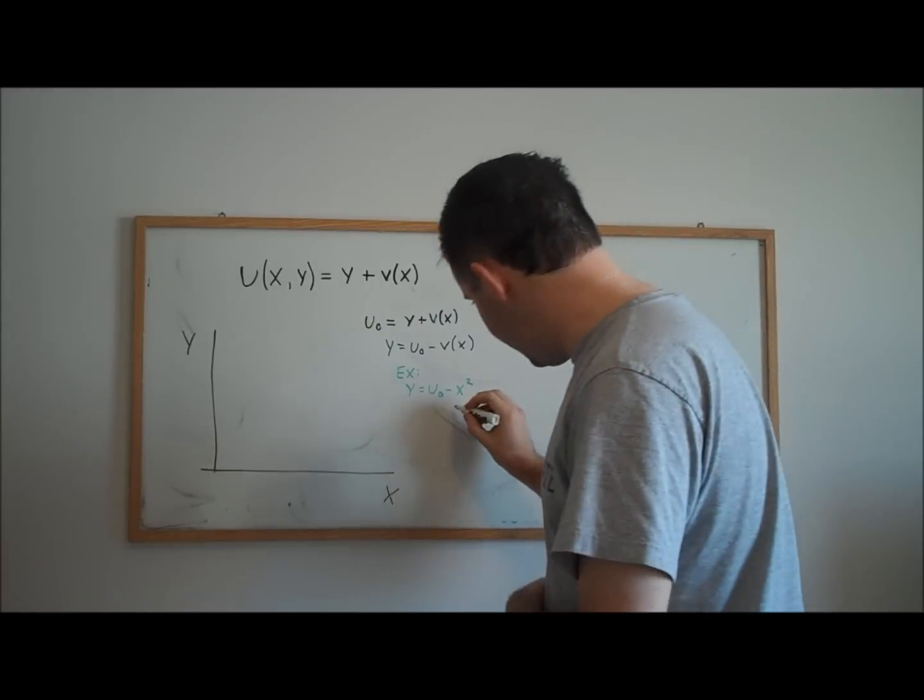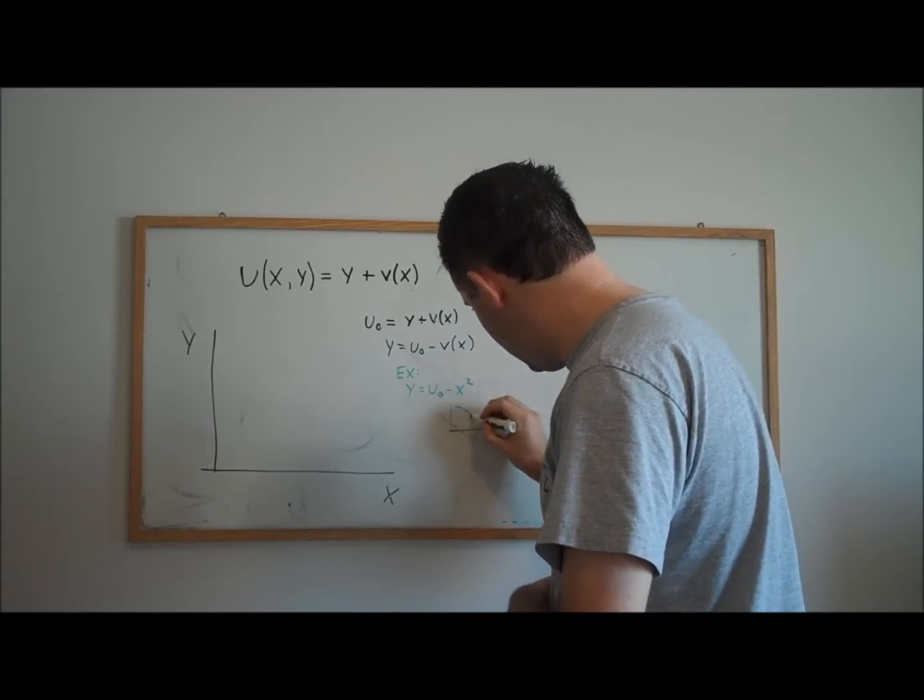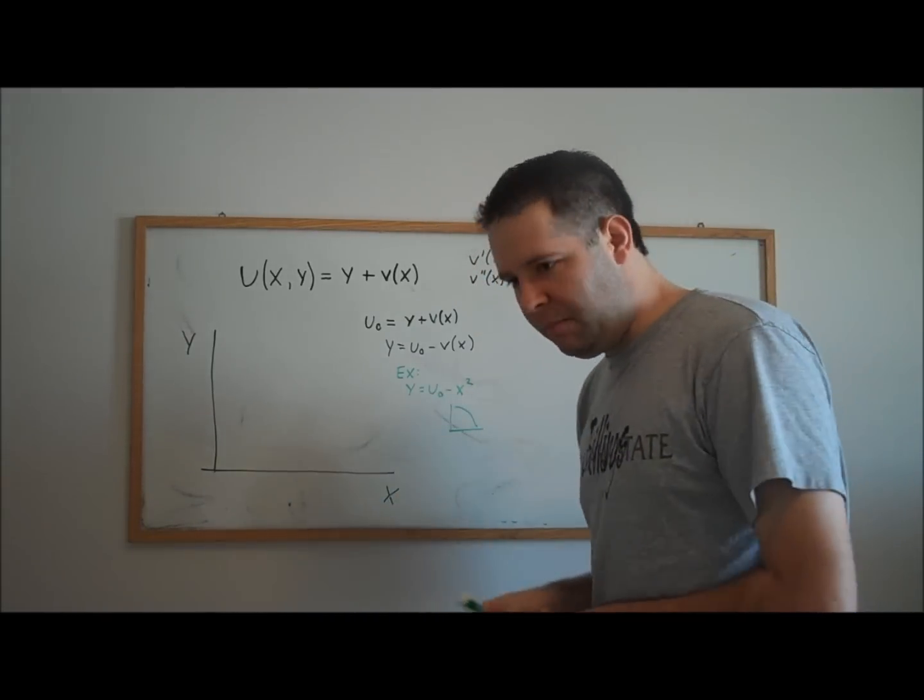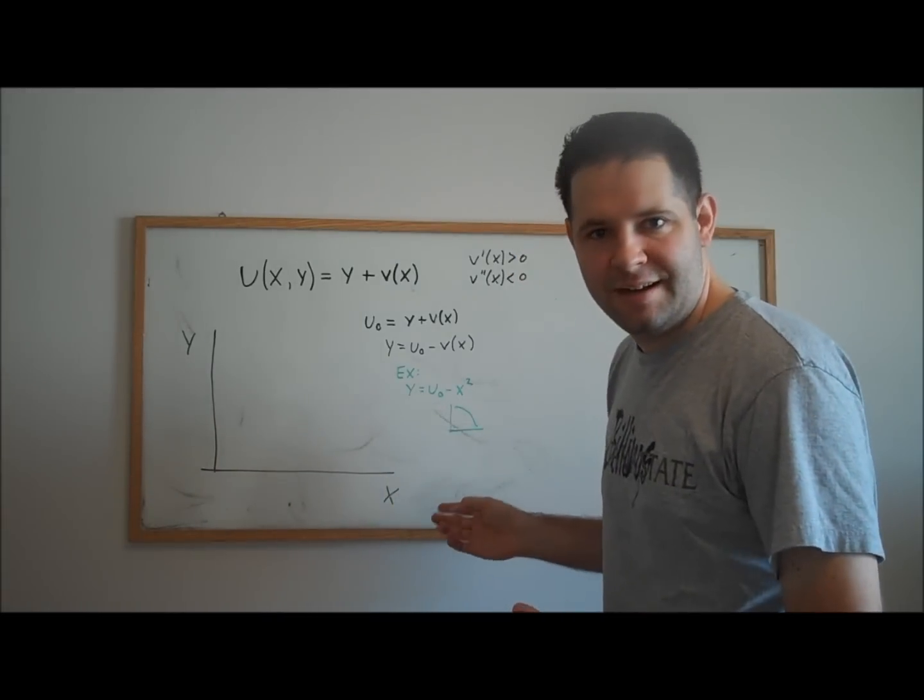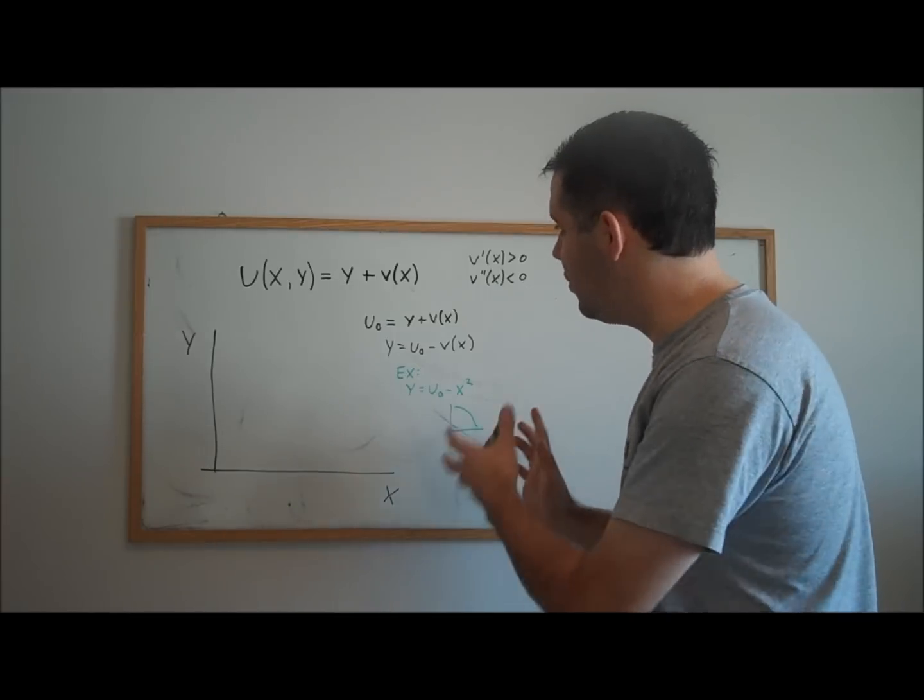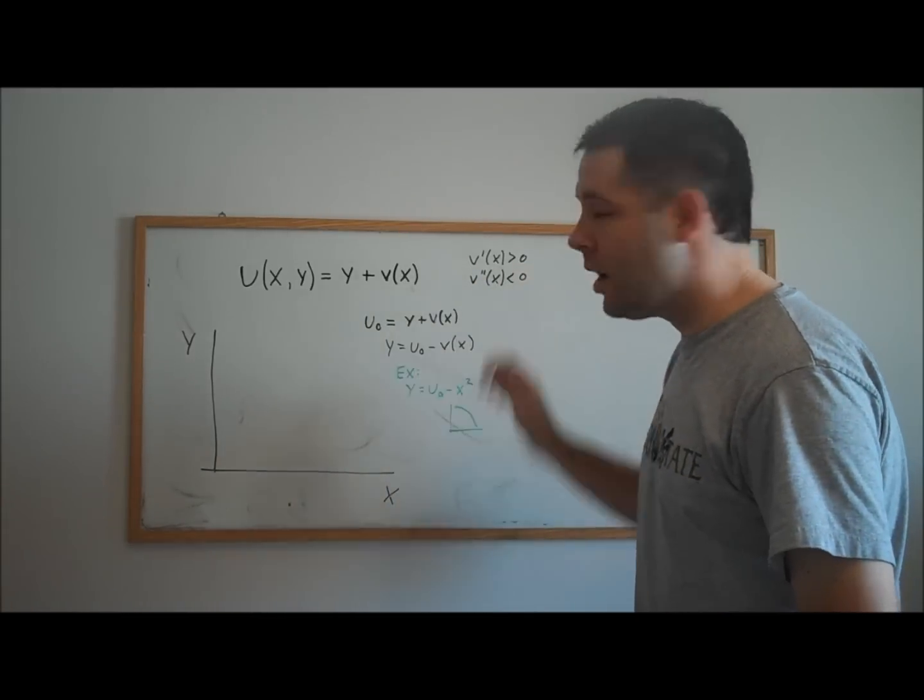If we were to go ahead and plot this indifference curve, this would have this sort of shape. And we typically, for reasons I've discussed in previous videos, we don't like to have that shape. So typically, quasi-linear utility has these two properties.